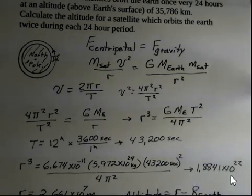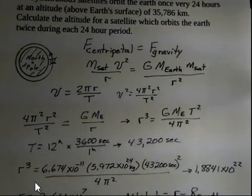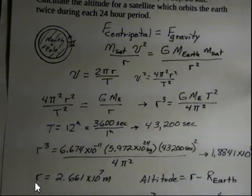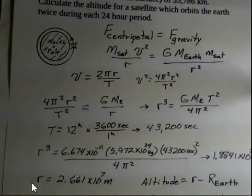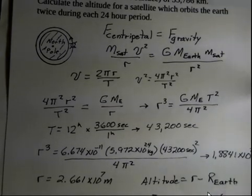Is that the radius? No, that's r³. So now I activated the cube root function on my calculator. And I come up with a value for r, 2.661×10⁷ meters. We're interested in the altitude. So we're going to take this value of r that was found and subtract the radius of the Earth.